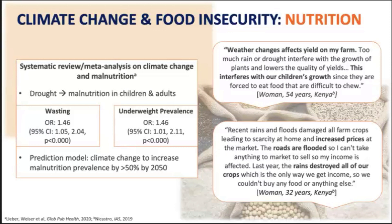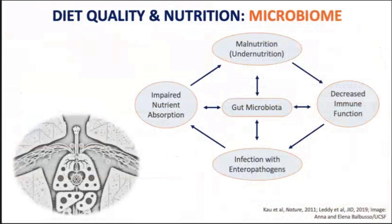A female participant stated: 'Weather changes affects yields on my farm. Too much rain or drought interfere with the growth of plants and lowers the quality of yields. This interferes with our children's growth since they are forced to eat food that are difficult to chew.' These climate-driven changes in our diet can also alter our gut microbiome and contribute to impaired immune responses, inflammation, and immune activation, which then increases risk of both infectious and non-communicable diseases.